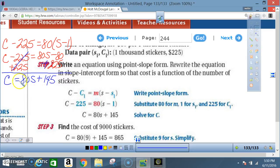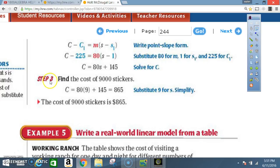Once again, Y equals MX plus B. That's what we have there. Okay then, so our last step, step three. Find the cost of 9,000 tickets. So, C is equal to 80 times 9 plus 145 and that's equal to 865. So, the cost of 9,000 tickets is $865.